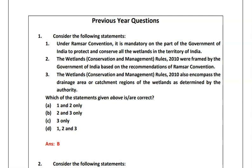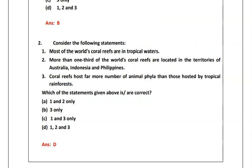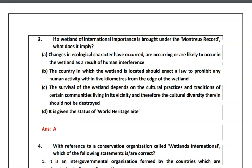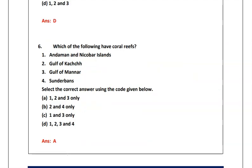In the previous year questions, one question is related to the Ramsar convention, then the basics about coral reefs have been asked, then they have asked what is the Montrex Record, Wetlands International, and the location of coral reefs in India. So from the previous year questions we can infer that questions are mainly related to basic concepts of coral reefs, wetlands and mangroves, and what conservation measures have been taken by the government or in the international perspective.